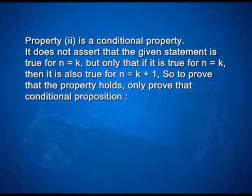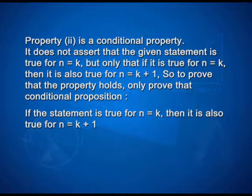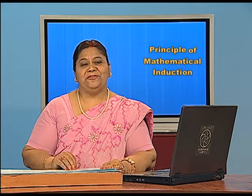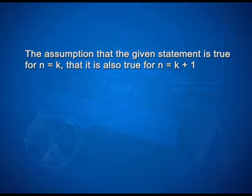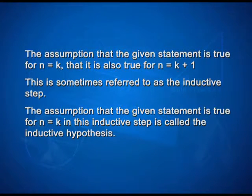So, to prove that the property holds, we only need to prove that conditional proposition. The conditional proposition is: if the statement is true for n equals k, then it is also true for n equals k plus 1. This is sometimes referred to as the inductive step. The assumption that the given statement is true for n equals k in the inductive step is also called the inductive hypothesis.